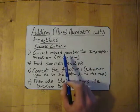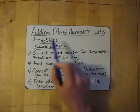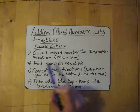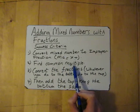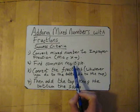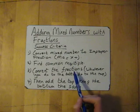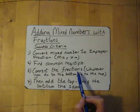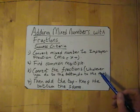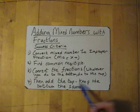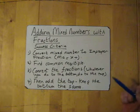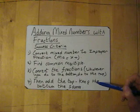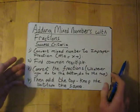You'll notice this a lot with all of these mixed number questions. The success criteria is: first, convert the mixed fraction to an improper fraction. Then find the common multiple for the two fractions. Then convert the fractions — whatever you do to the bottom, do to the top — and finally add the tops and keep the bottom the same.